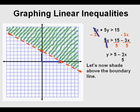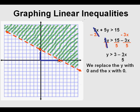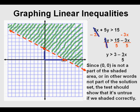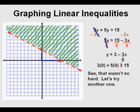Now let's test our solution set by trying (0, 0). We replace y with 0 and x with 0. We get 3 times 0 plus 5 times 0, which is 0, and 0 is not greater than 15. So (0, 0) is not part of the solution set — which is consistent with the way we shaded it.